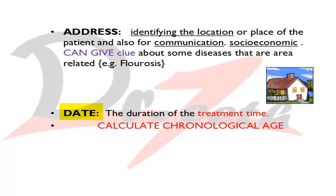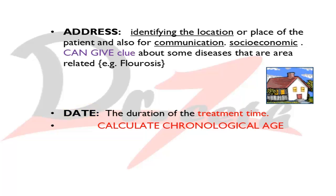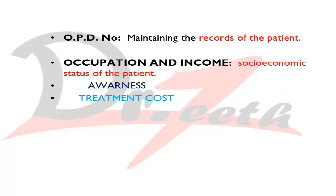The date is mentioned to give a rough idea about the treatment time — how long it will take and when treatment will finish. If treatment is already finished, you can calculate how much time it took. It also helps calculate the chronological age using the date of birth.